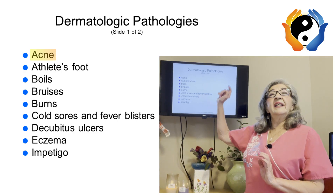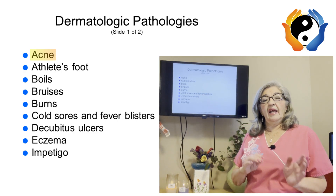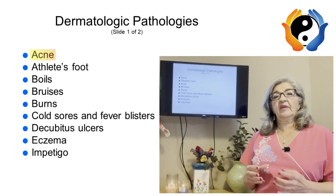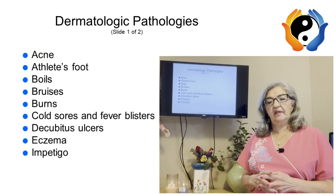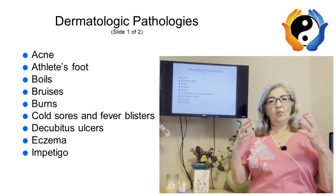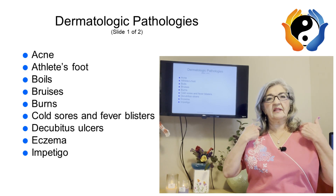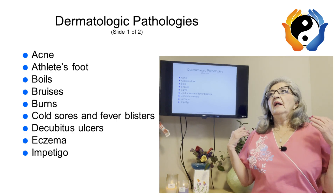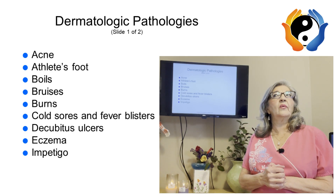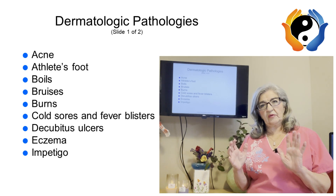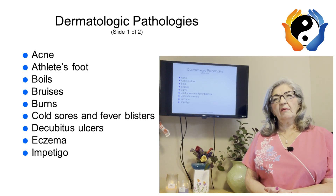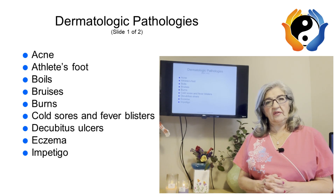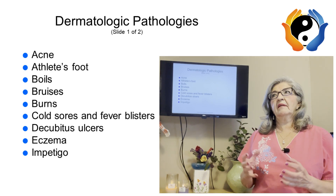Let's start with acne. Acne is inflammation and/or infection of the sebaceous hair follicles or hair glands. It is associated with the sebaceous glands and is more predominant on the face, the V-neck area, the chest, the upper back, and the shoulders. It is more common in teenagers due to overproduction of sebaceous glands and hormones.